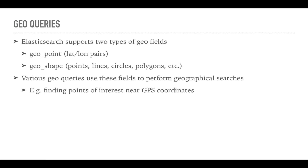Last but not least are geo queries. As you might recall, there are two data types for geo fields: geo_point and geo_shape. There are a number of geo queries that use these fields to perform geographical searches, such as finding nearby points of interest based on GPS coordinates. There are quite a few of these queries, so I'm not going to go through them right now.